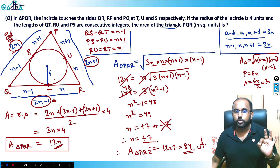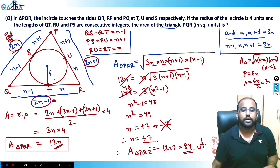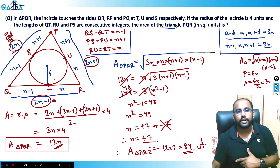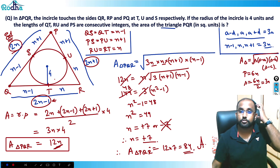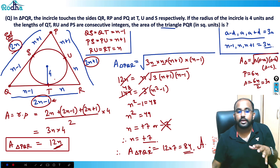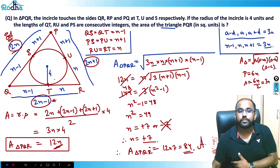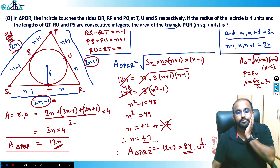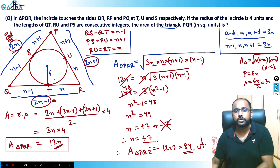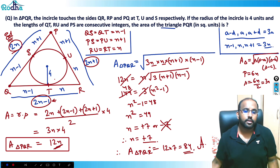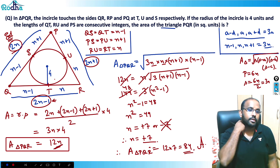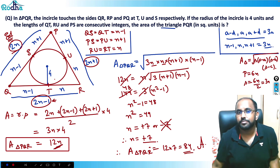That's a really good question. The key concepts: take consecutive integers as n−1, n, n+1 for ease of calculation; compute area using both r × s and Heron's formula, then equate them to find n. The area of triangle PQR is 84. See you in the next video!